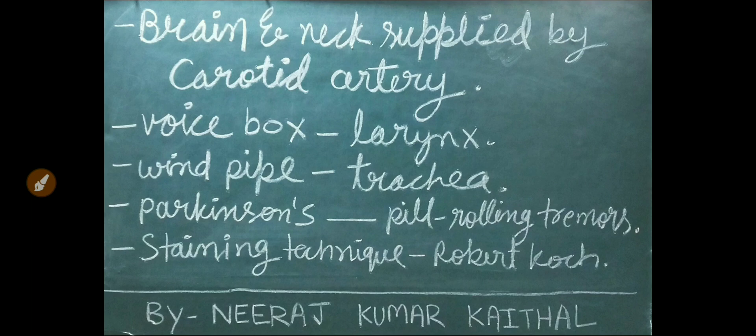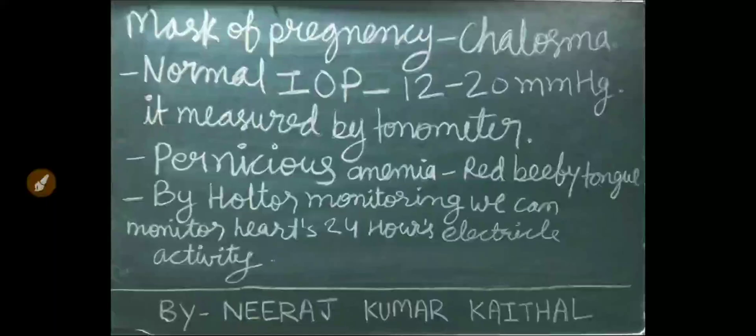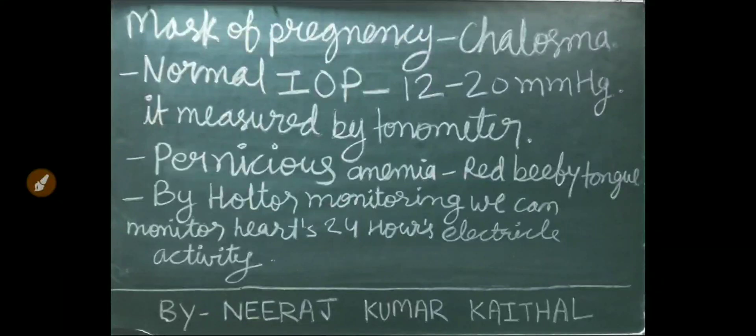Staining technique is given by Robert Koch. Mask of pregnancy is called chloasma. Normal intraocular pressure is 12 to 20 mmHg, and it is measured by tonometer.